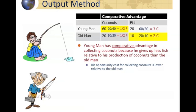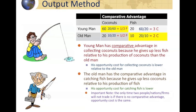The young man has a comparative advantage in collecting coconuts, because he gives up less fish when he collects coconuts relative to the old man — his per unit opportunity cost is lower. So the young man should focus on coconut production. The old man has a comparative advantage in fish production because he gives up less coconuts when catching a fish. Each person has a comparative advantage in one product, and we want to look at how they can benefit by specializing and trading.